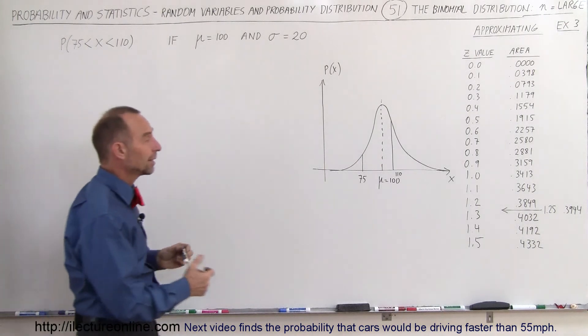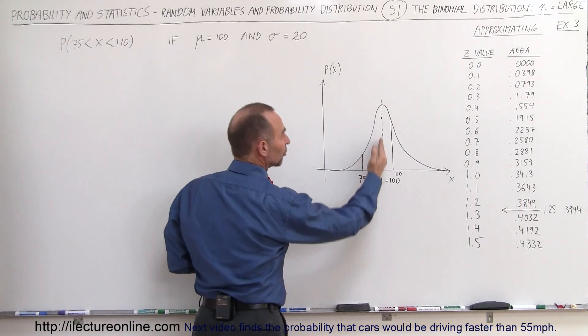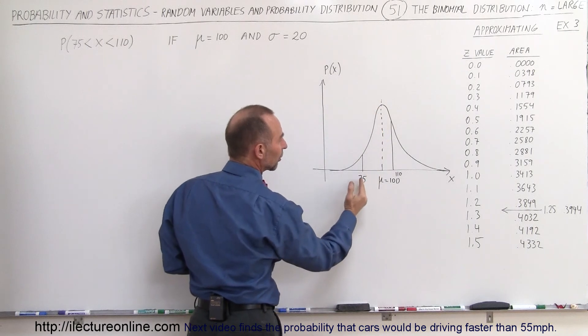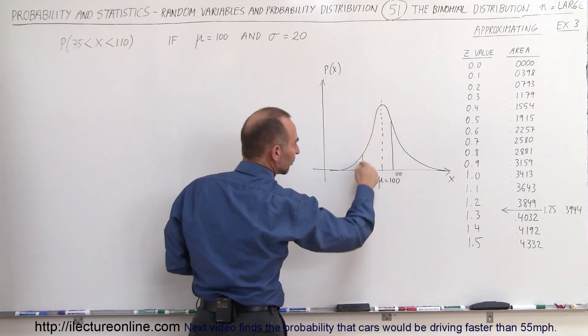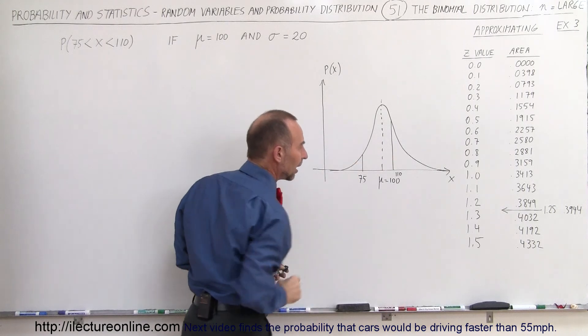If we look in the graph, knowing that the expected value is equal to 100, which is the most probable value, we're looking for a probability from 75 to 110, which means we're looking for the area between these two vertical lines.